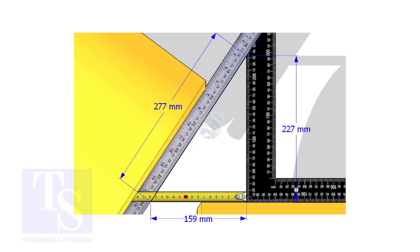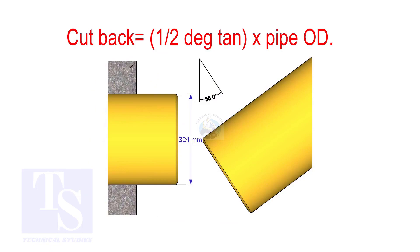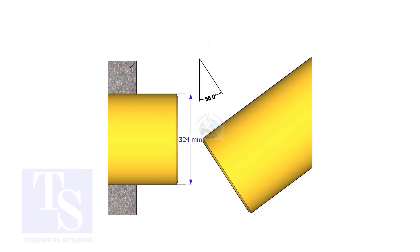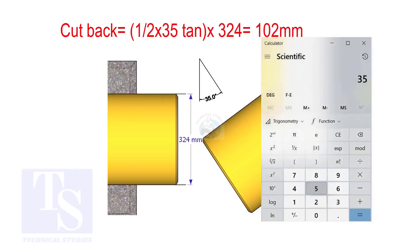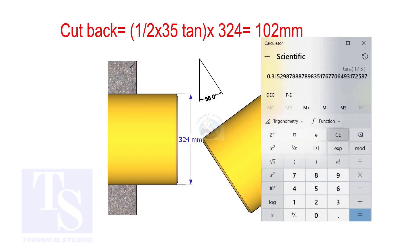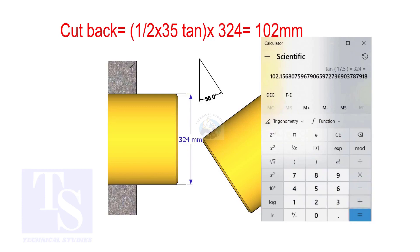How to calculate the cutback of a single cut miter. When it is a single cut, the cutback is: half-degree tan, multiplied by the OD of the pipe. The answer is 102 millimeters.